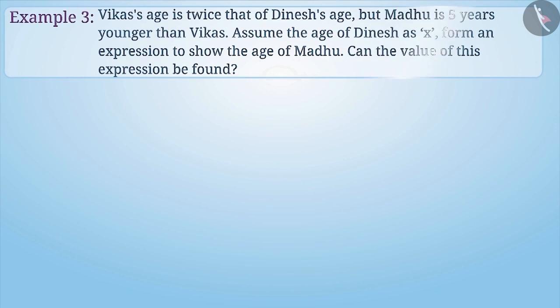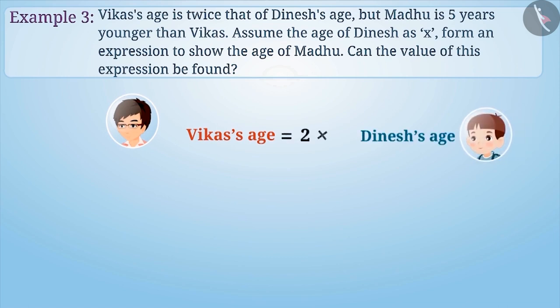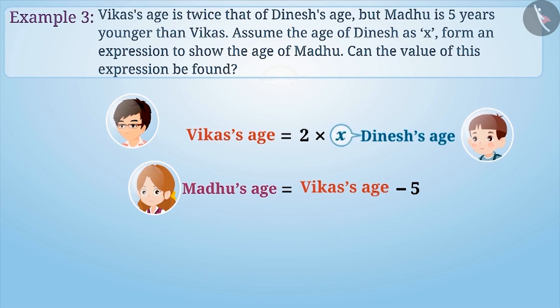It is very important to understand the given information for converting a statement into an expression. Here, Vikas is older because his age is twice the age of Dinesh and Madhu is 5 years younger to him. If we consider the age of Dinesh as variable x, then the age of Vikas can be written as 2x.